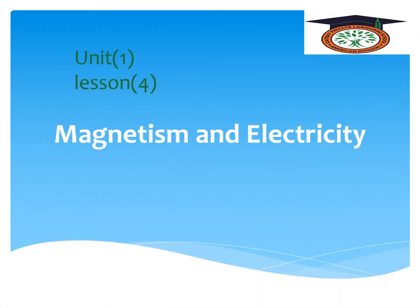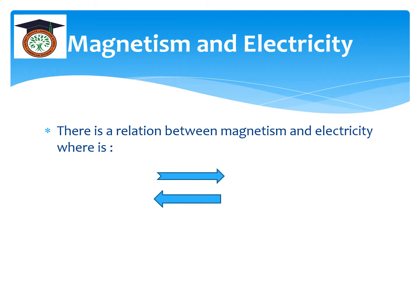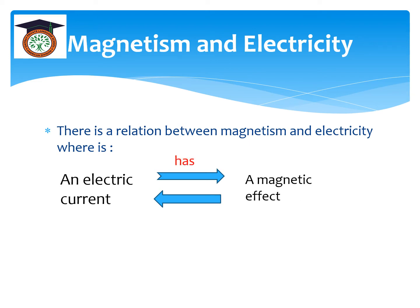Hello students, today we will complete unit 1, lesson 4, talking about magnetism and electricity. We discussed before about the magnet, and today we'll start the relation between magnetism and electricity. There is a relation between them: an electric current has a magnetic effect, or a magnetic effect can generate an electric current.